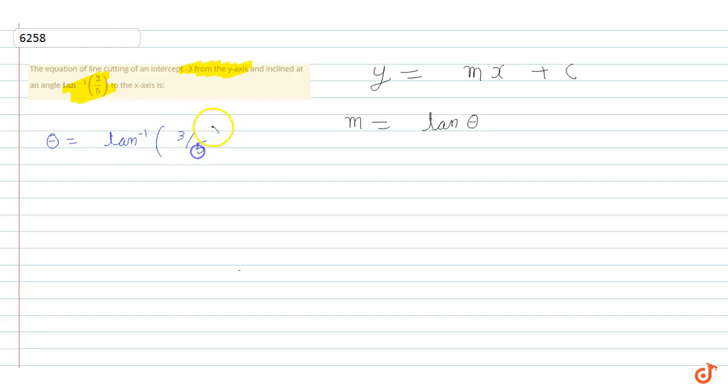So, if theta is equal to tan inverse 3 by 5, then the value of tan theta is equal to 3 by 5.